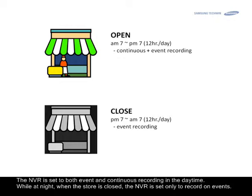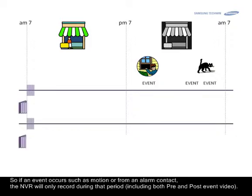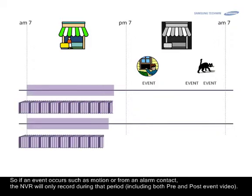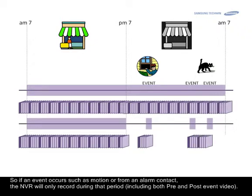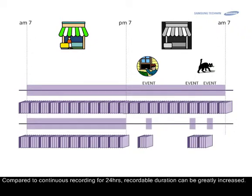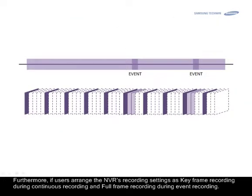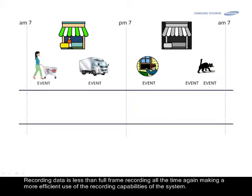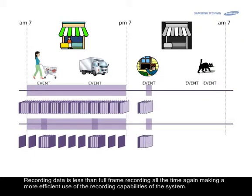While at night the store is closed, the NVR is set only to record on event. So if an event occurs, such as motion or from an alarm contact, the NVR will only record during that period. Compared to continuous recording for 24 hours, recordable duration can greatly increase. Furthermore, if users arrange keyframe recording during continuous recording and full frame recording during event recording, recording data is less than full frame recording all the time, making it a more efficient use of the recording capabilities of the system.